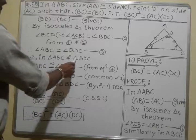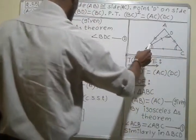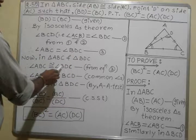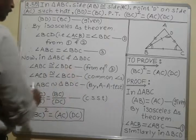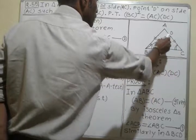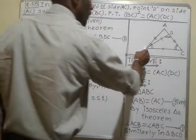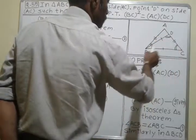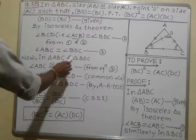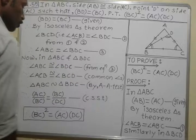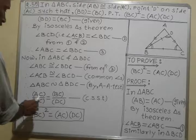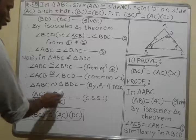Now, in triangle ABC and triangle BDC, we have angle ABC congruent to angle BDC from equation 3, and angle ACB congruent to angle BCD because these are the same common angle. Therefore, triangle ABC is similar to triangle BDC by the AA test of similarity. Since the triangles are similar, the ratio of their corresponding sides is in proportion, giving us AC upon BC is equal to BC upon DC.